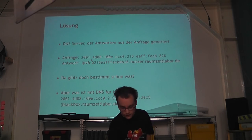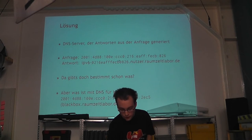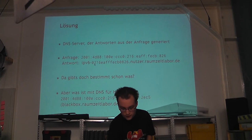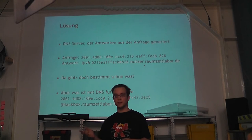So what does such a query look like? We had the example we just saw — this IPv6 address. And the answer is simply 'ipv6-' followed by the variable part. The beginning — these first bits — belongs to the prefix and never changes. Then comes 0216eaff and so on, which is reflected in the address. And then it continues with .nutzer.raumzeitlabor.de. If you're in the IRC channel for Raumzeitlabor, you may have seen some people join with such a hostname — that's exactly this.